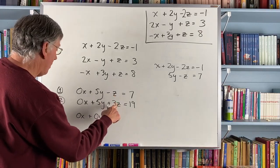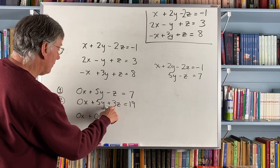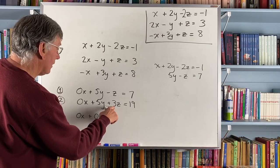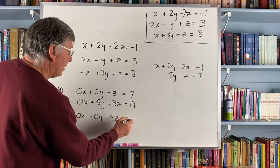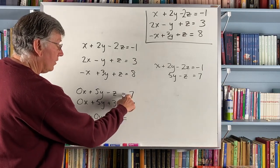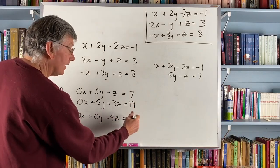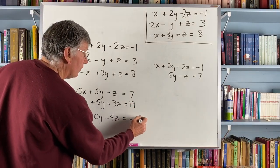Minus z minus 3z gives me a minus 4z. And 7 minus 19 gives me a negative 12.